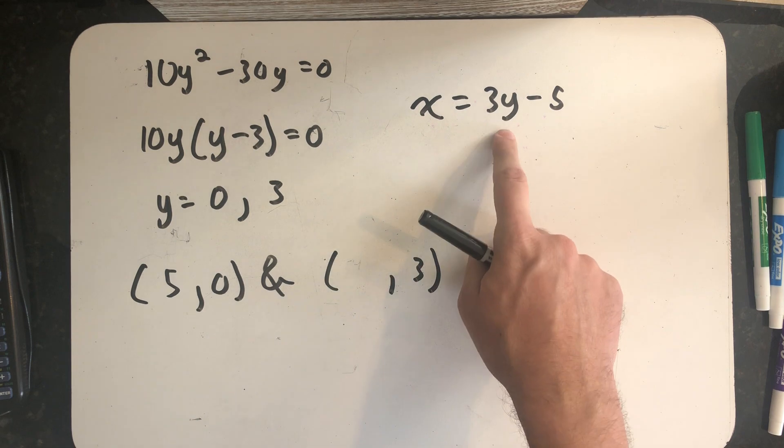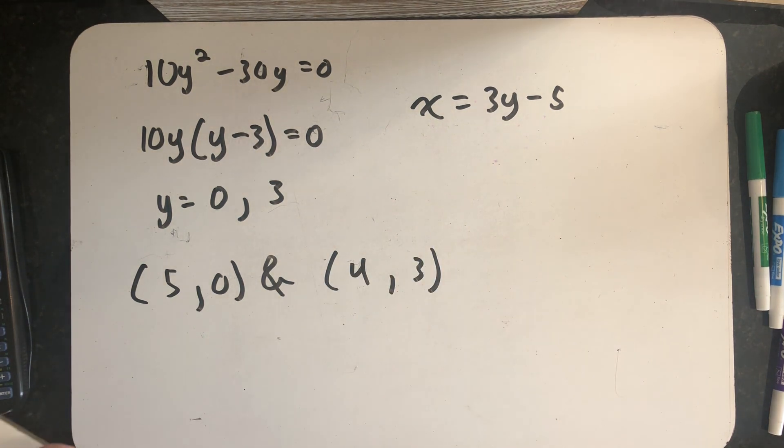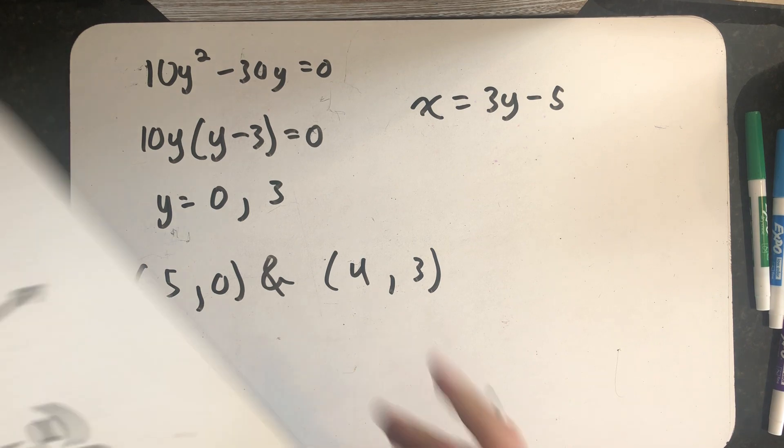Plugging in 3 for y tells me that 3 times 3 is 9 minus 5. So (4, 3) is my other solution.